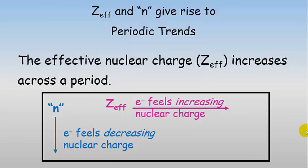Also remember that the principal quantum number n, in the sense of the size of the orbital, increases as we go down a column. All of this leads to valence electrons feeling increasing nuclear charge as we go across a row or a period, and decreasing nuclear charge as we go down a column or a group.